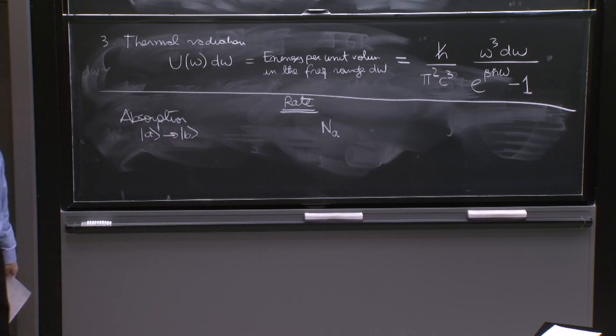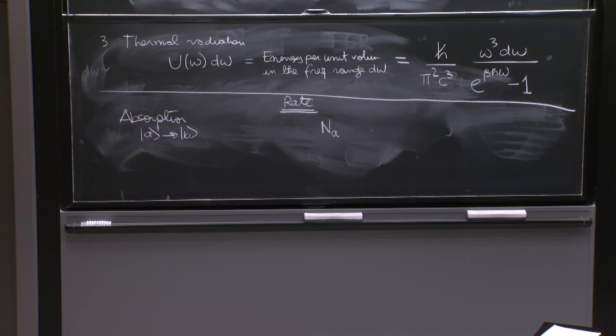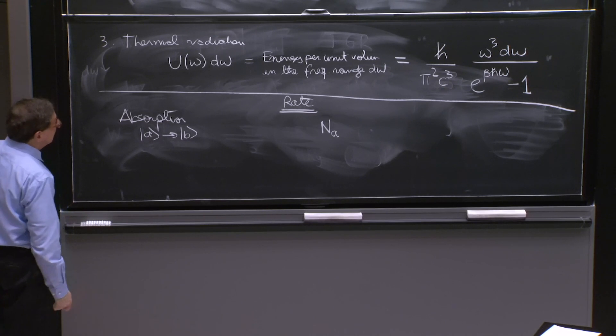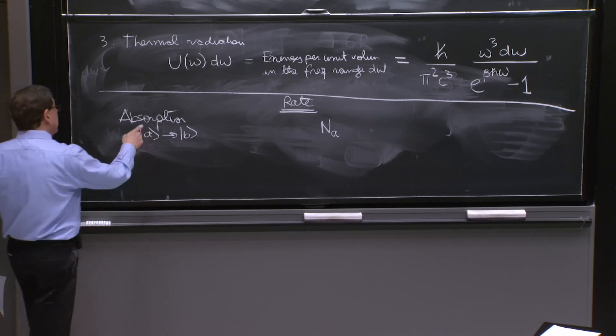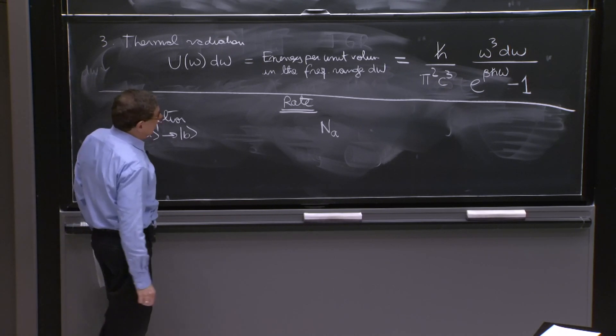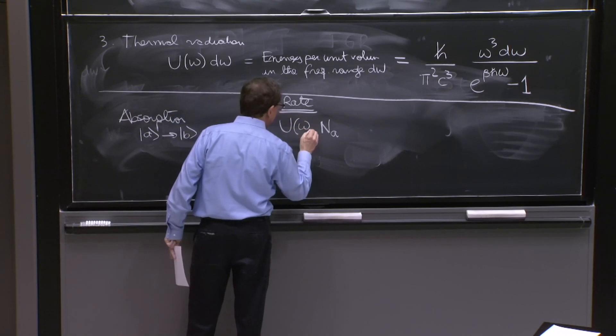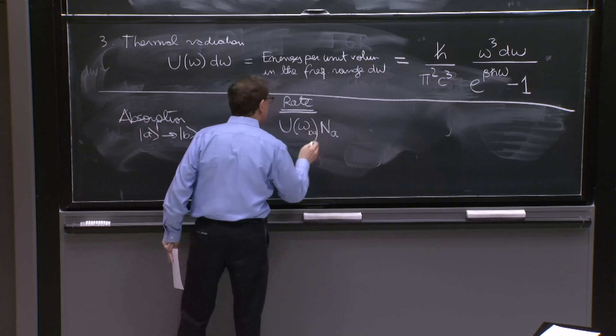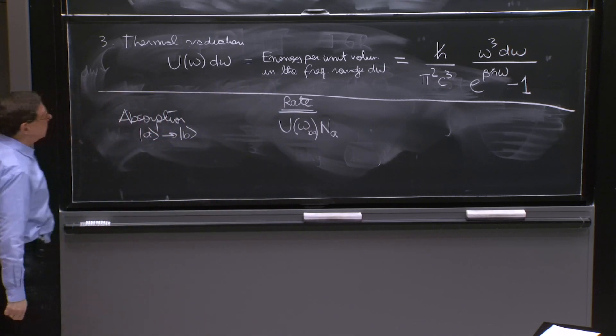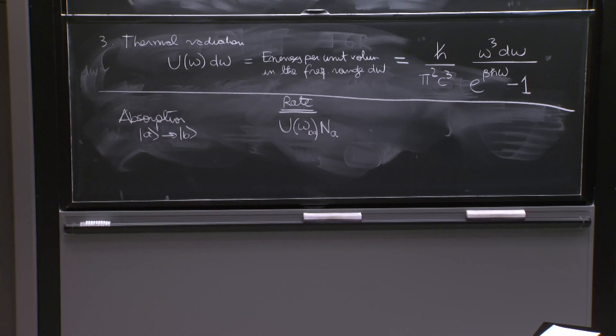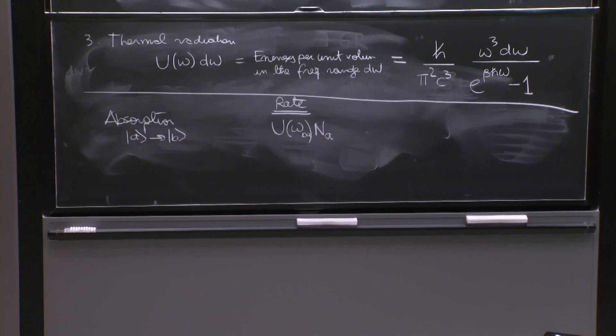The more particles you have in the state A, the larger the probability that you get the transitions and the larger the rate. It will also be affected by the number of photons available at that frequency that can produce a transition in proportional to that.